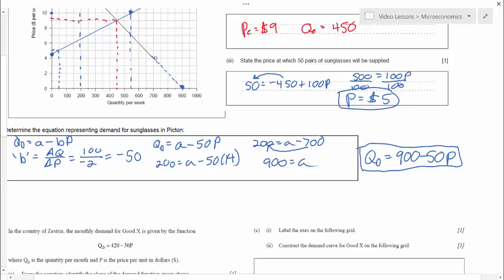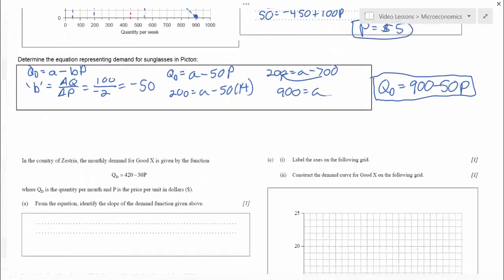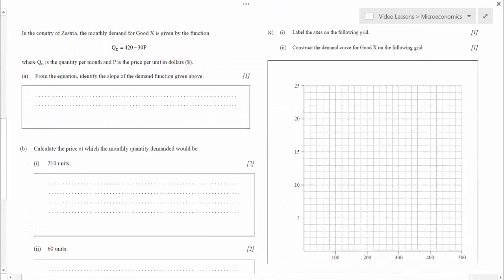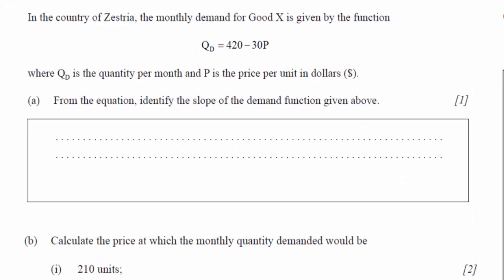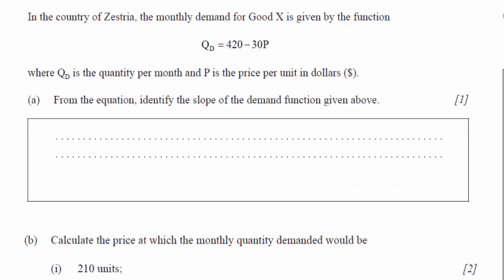Let's move on to the next problem and begin working on it. Here's the prompt. In the country of Zestria, the monthly demand for good X is given by the function Qd equals 420 minus 30P, where Qd is the quantity per month and P is the price per unit in dollars.